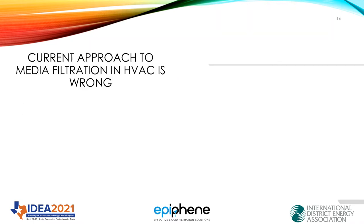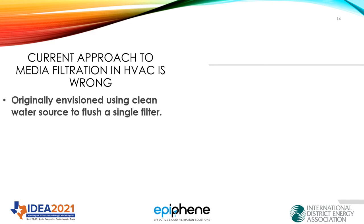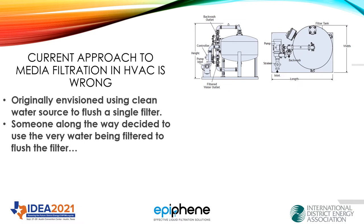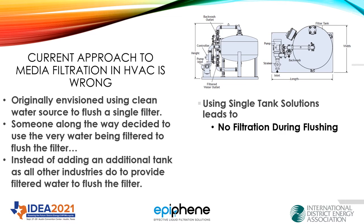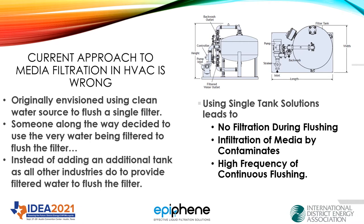I want to talk briefly about why I believe the current approach to media filtration in HVAC is wrong. First, it was originally envisioned using a clean water source to a single filter. Somewhere along the way, somebody decided they could use the cooling tower water to flush the filter — instead of adding an additional tank, as all other industries do, to provide filtered water to flush the filter. So these single tank solutions basically provide no filtration during flushing. The infiltration of the media by contaminants from using dirty water to fluidize the bed is a no-no, and it actually leads to high-frequency or continuous flushing. Eventually that system is abandoned because it fails — either from surface sealing issues, contamination of the bed — and the bottom line is that filter gets taken out of service.